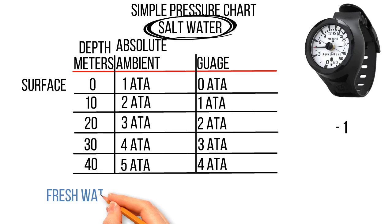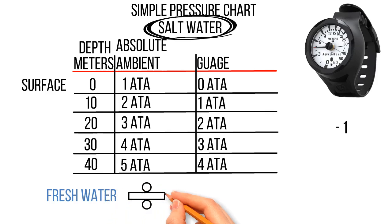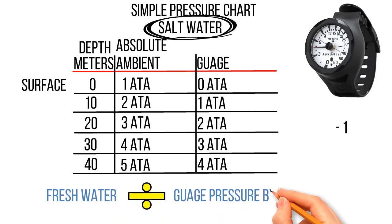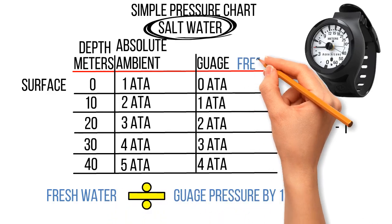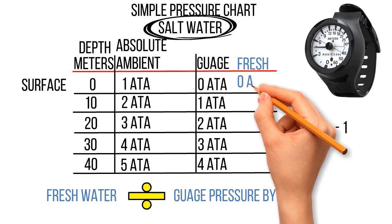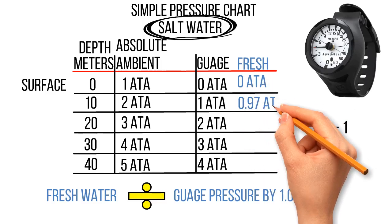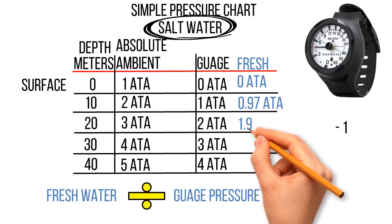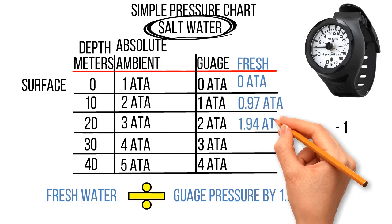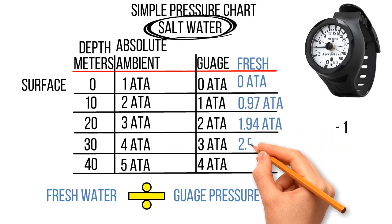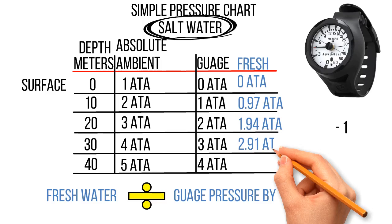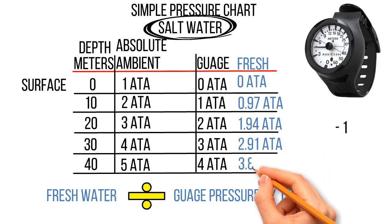What is it going to be in freshwater? To get freshwater we divide by 1.03. So it's going to be 0 atm at the surface, 0.97 at 10 metres, and so on and so forth.